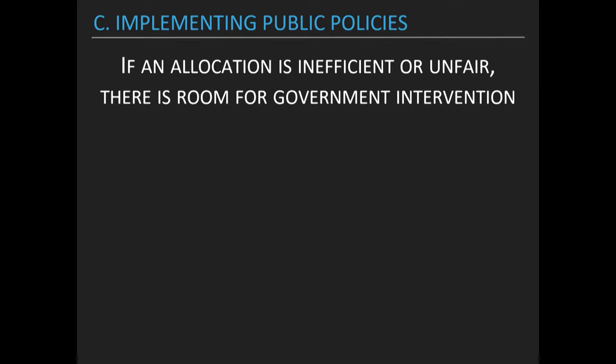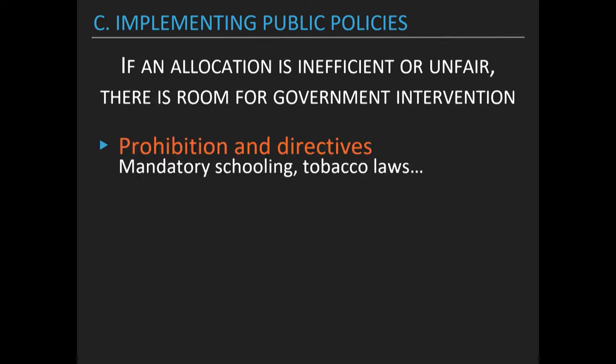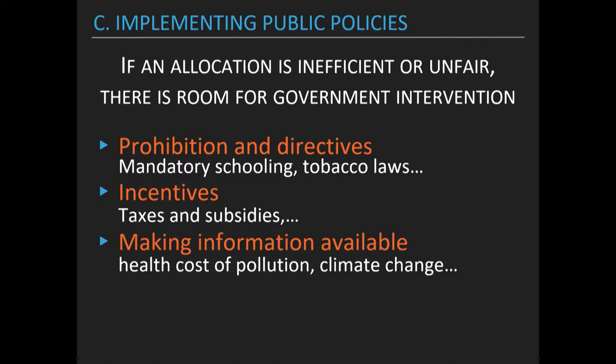How do we connect this with the public sector? If an allocation is inefficient or unfair — if it's not desirable — then there is room for government intervention. Governments can either intervene by prohibiting or giving directives, creating incentives such as taxes and subsidies, or making information available.